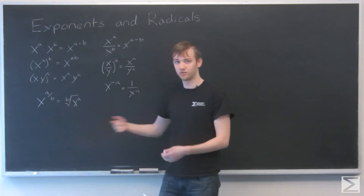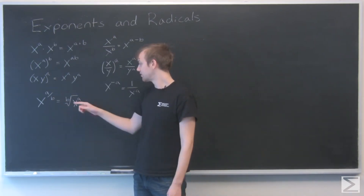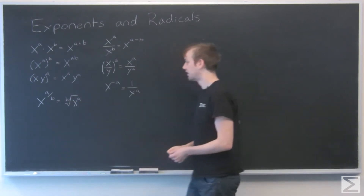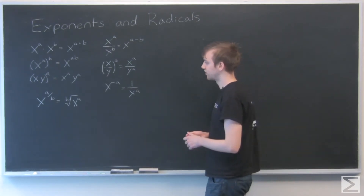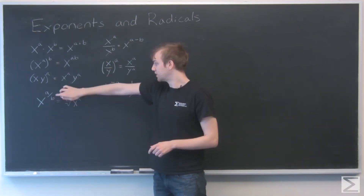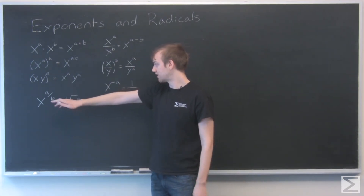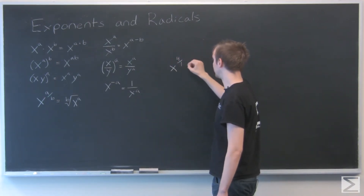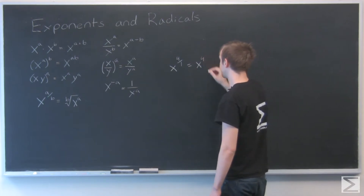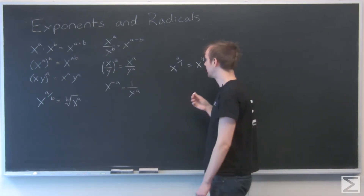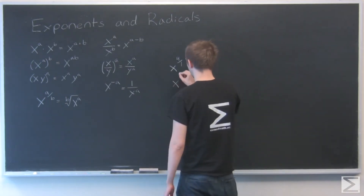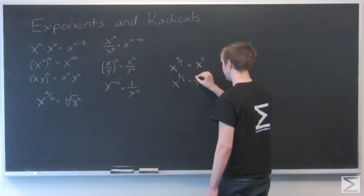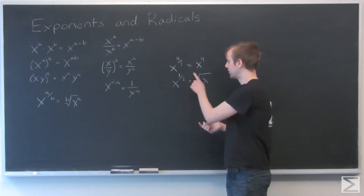This rule converts between exponents and radicals: x to the a over b equals the b-th root of x to the a. If b is 1, that's just x to the a with no radical sign — so x to the 4 over 1 is just x to the fourth. If the numerator is 1, like x to the one half, that's just the square root of x, and for the square root sign we don't usually write the 2.